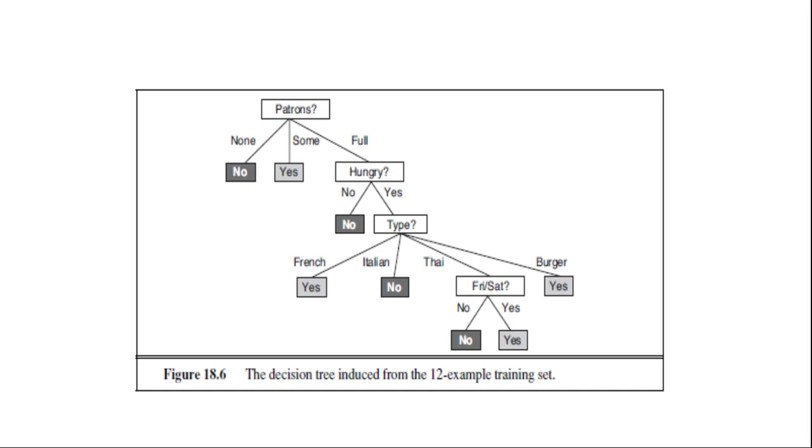One might conclude that the learning algorithm is not doing a very good job of learning the correct function. This would be the wrong conclusion to draw. The learning algorithm looks at the examples, not at the correct function, and its hypothesis is not only consistent with all the examples but is considerably simpler than the original tree.